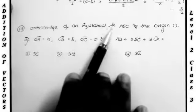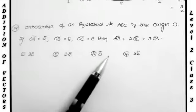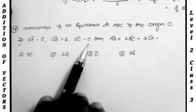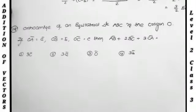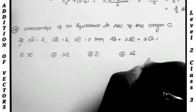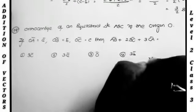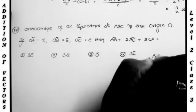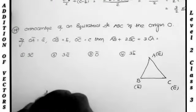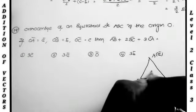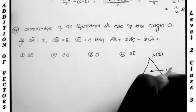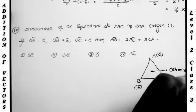Next problem: O is the orthocentre of equilateral triangle ABC. Given OA bar equals A bar, OB bar equals B bar, OC bar equals C bar. Find the value of AB bar plus 2 into BC bar plus 3 into CA bar. One equilateral triangle ABC is given, and the orthocentre is the origin. In an equilateral triangle, orthocentre equals centroid equals circumcentre — all are equal.